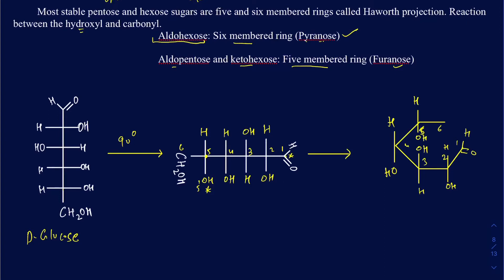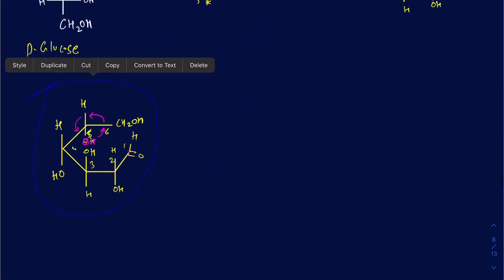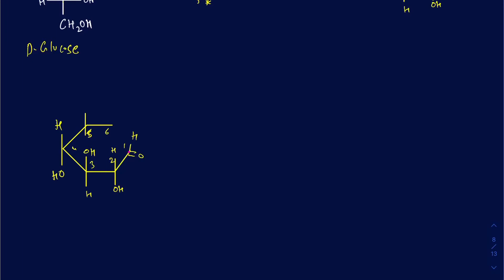Number 6 is CH2OH. The OH on number 5 and that carbon are going to be the ones attacking one another to make a cyclic 6-membered pyranose ring. The OH is not closer to the carbonyl yet, so I'm going to rotate this part of the molecule. When I rotate it, this comes up here, this comes down here, and the hydrogen comes down here, so you'll have this properly oriented.